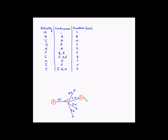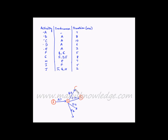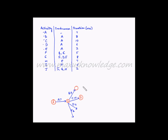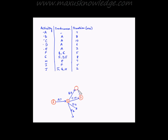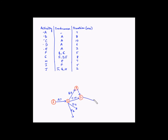F emerges from event 3, but F is also dependent on the completion of B. So we draw an event denoting the completion of B — let us call it event 4 — and draw a dummy activity from event 4 to event 3. Then any activity emerging from event 3 will depend on both B and C. Activity F takes 5 weeks, so we put 5 next to F.